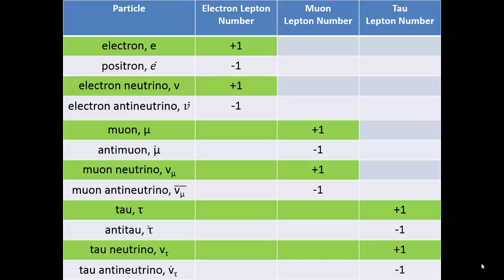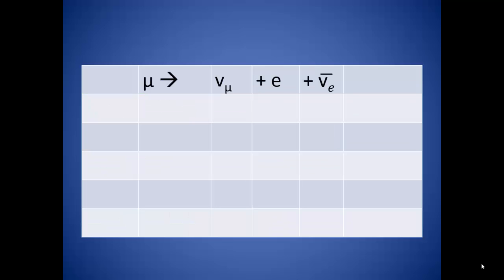The key here is knowing your leptons and to stick with assigning the same set of numbers for each particle in your reaction. Let's look to see if a muon will decay into a muon neutrino, an electron, and an electron antineutrino. First we can use the electron numbers. A muon has an electron lepton number of zero. A muon neutrino also has zero. An electron has an electron lepton number of positive one, and the electron antineutrino has an electron lepton number of negative one. The numbers on the left add up to zero, and the numbers on the right add up to zero. So the electron lepton numbers are indeed conserved.